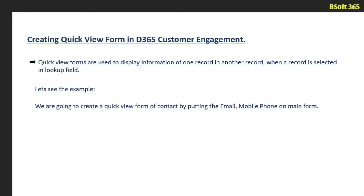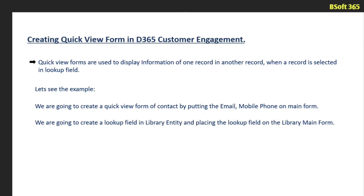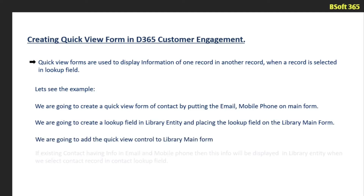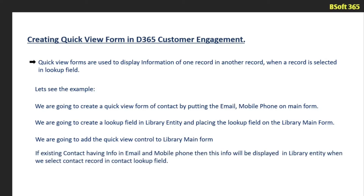Let's see the example. First we are going to create a quick view form of a contact by putting the email and mobile phone on a main form, and then we are going to create a lookup field in the library entity and placing the lookup field on the library main form. Then we are going to add the quick view control to the library main form. If the existing contact has info in email and mobile phone, then this info will be displayed in the library entity when we select the contact record in the contact lookup field.